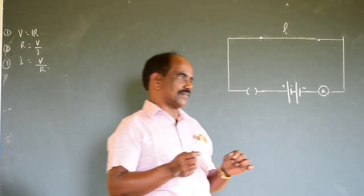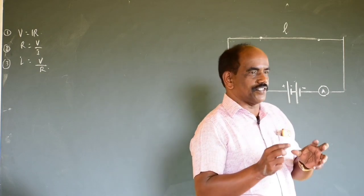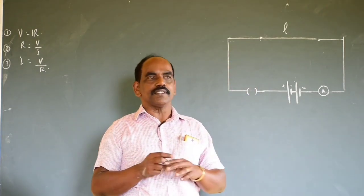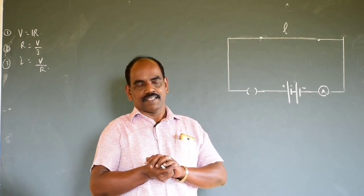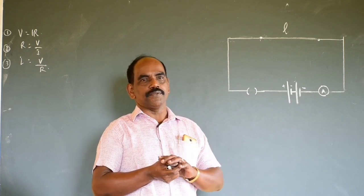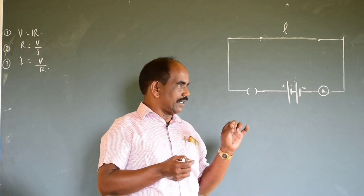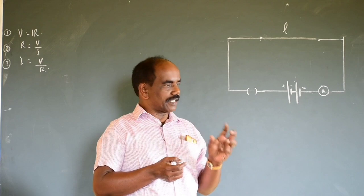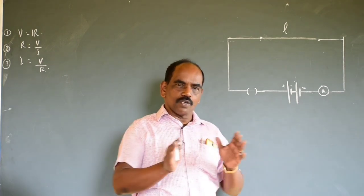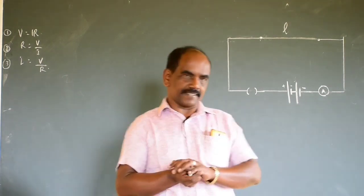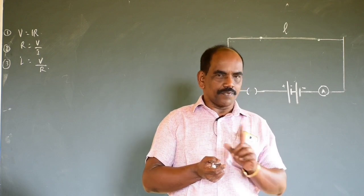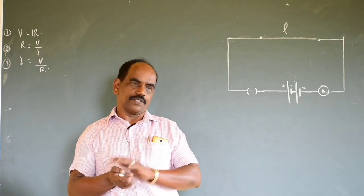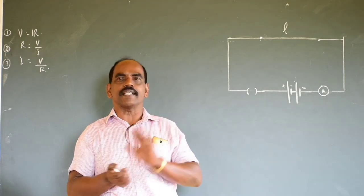I am going to take the electricity chapter, related to the characteristics. The last thing I told you was that electricity passing through a conductor — a conductor always offers resistance. That means free flow of current is opposed. That is the meaning of resistance. Today we are going to do one thing.